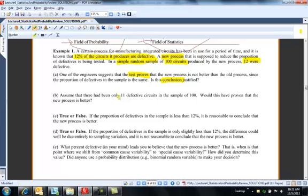Assume that there had been only 11 defective circuits. Would this have proven that the new process is better? No, I mean, again, with only a sample size 100, 11 being defective, there's a lot of variation, natural variation, so I don't think 11 shows it's better automatically.